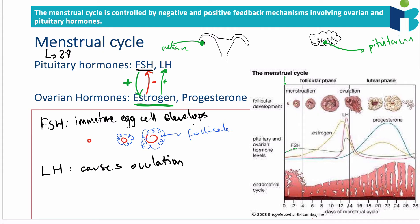There is an LH surge — a spike in LH around day 14 — when ovulation occurs. Simultaneously, estrogen levels go down because the follicle cells rupture and stop releasing estrogen. LH also causes the development of something called the corpus luteum — 'corpus' meaning body, 'luteum' meaning yellow — which is basically the remnant of the follicle cells that have developed into a different cell type.